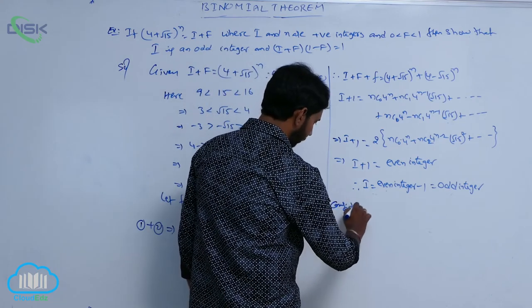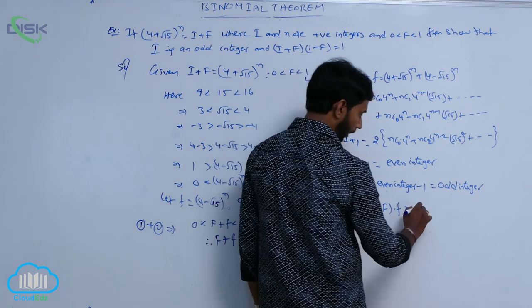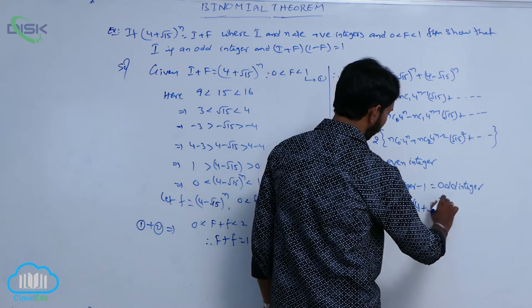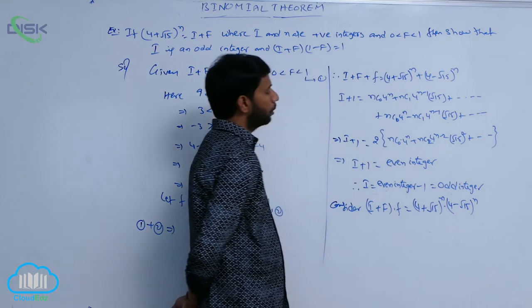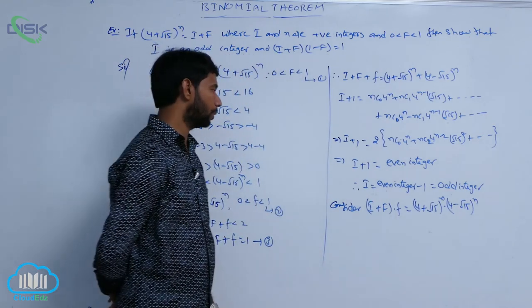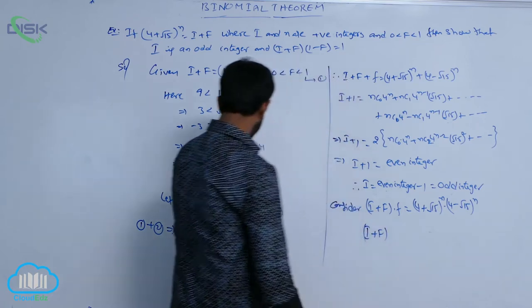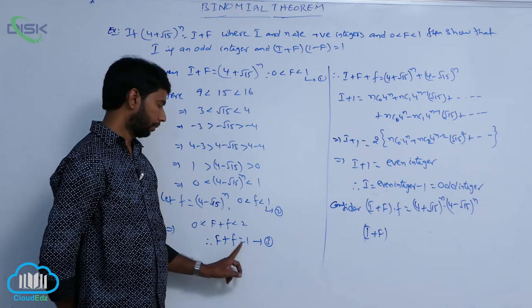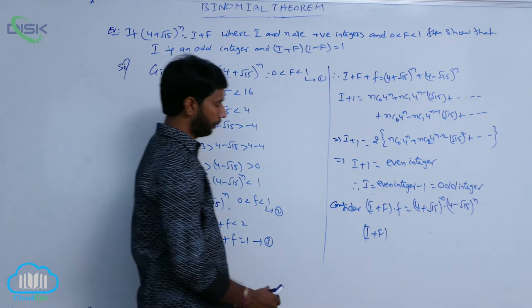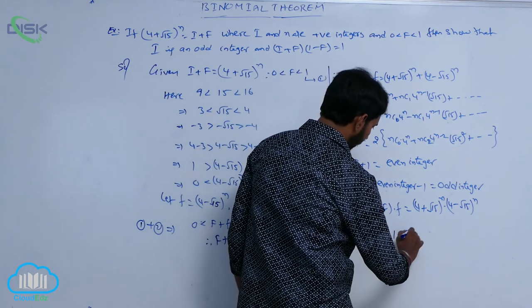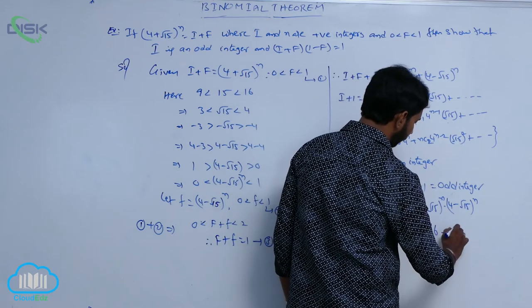Next, consider (i + f)·f'. Here i + f = (4 + √15)^n, so (i + f)·f' = (4 + √15)^n · (4 - √15)^n. From condition 3, F + f' = 1, so f' = 1 - F. This product is of the form (a + b)(a - b) = 16 - 15 = 1 whole power n.